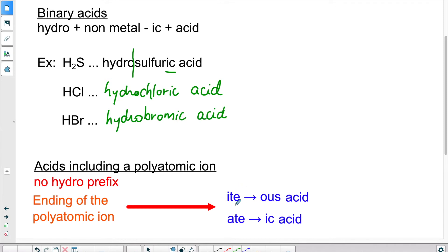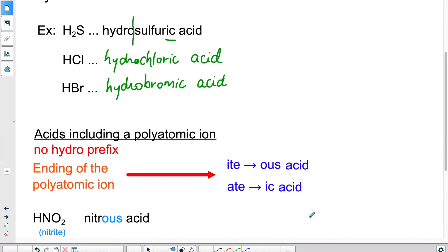If it ends in ITE, like nitrite, we'll change the ending for OUS. If the ending of the polyatomic ion is in ATE, like nitrate as an example, we'll change for the ending in IC and put the word acid.